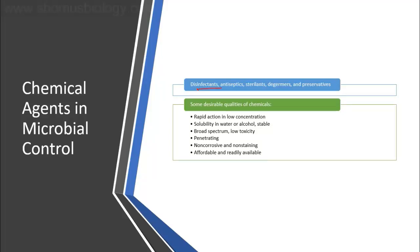Chemical agents can be used as disinfectants, antiseptics, for sterilization, as detergents, and as preservatives. Some desirable qualities for chemicals used in microbial control include rapid action in low concentration, solubility in water or alcohol, stability, broad spectrum activity, low toxicity, penetrating ability, non-corrosive and non-staining properties, and they should be affordable and readily available.